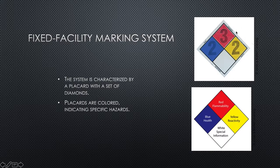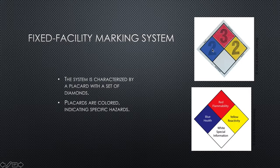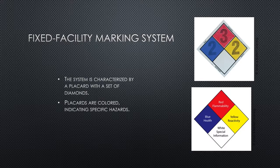For actual buildings or facilities that have hazardous materials inside, you'll find a diamond-shaped system with these placards. Red is for fire and flammability. Blue is for health — probable health reactions. Yellow is for reactivity or radioactivity, and white provides special information. The NFPA 704 standard system for identification of hazardous materials for emergency response outlines this marking system used for fixed facilities. The placard with a set of diamonds is found on the outside of buildings, doorways to chemical storage areas, and fixed storage tanks.